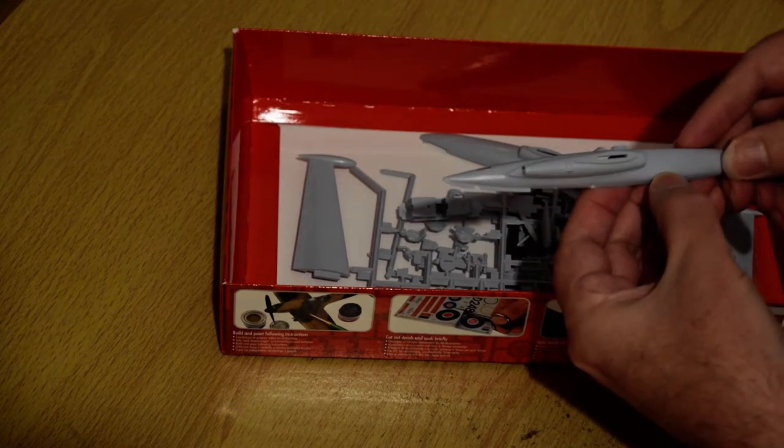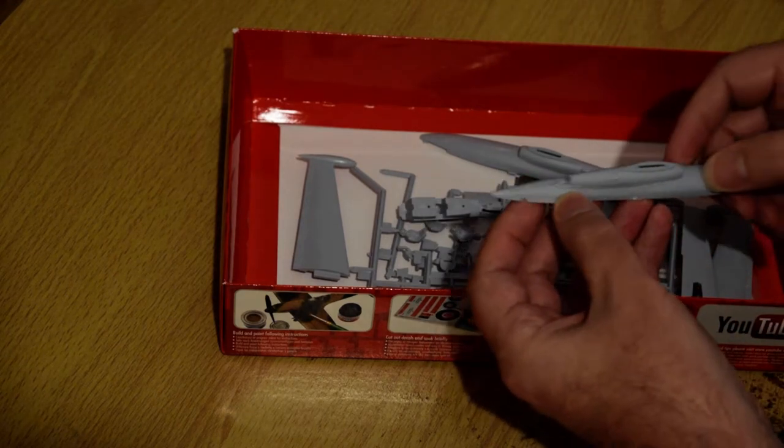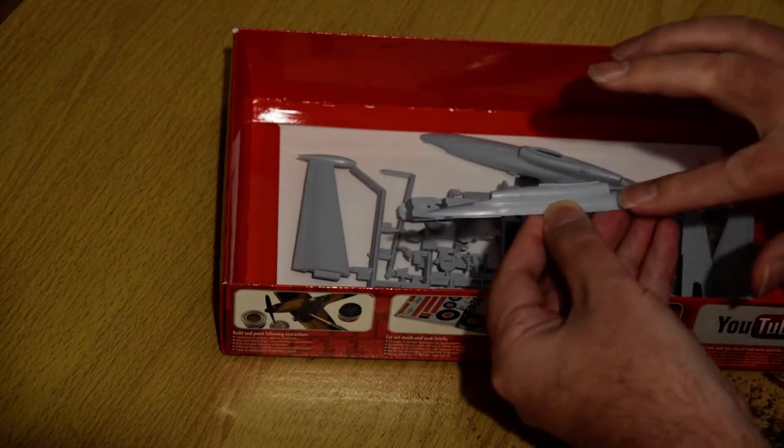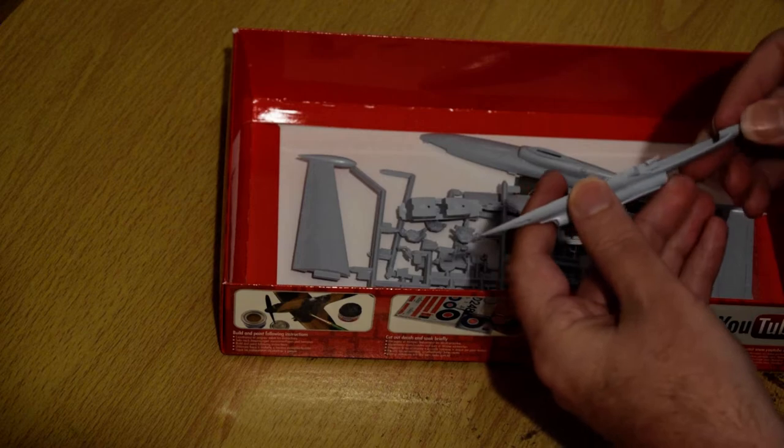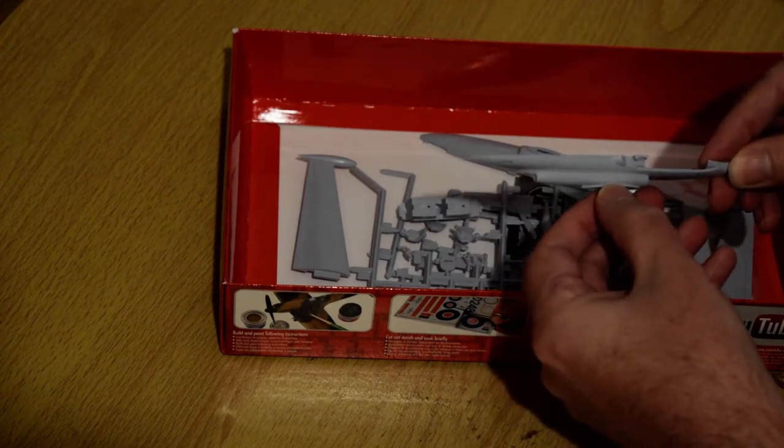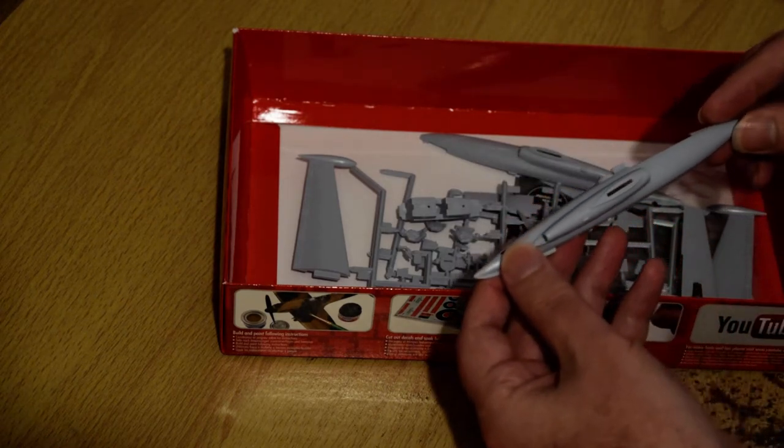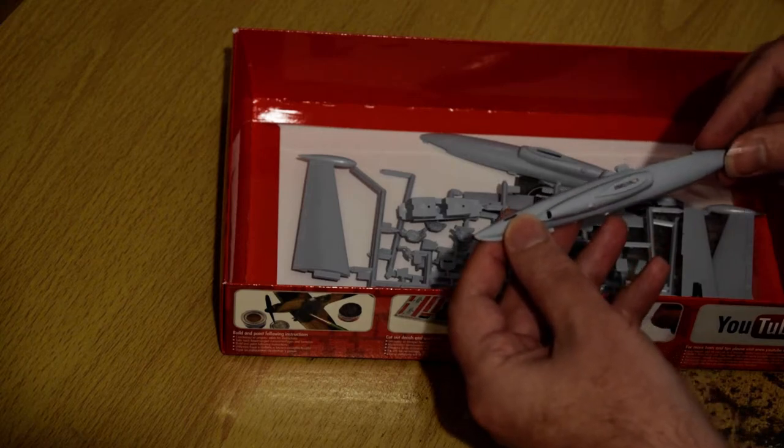They have some raised panel lines and the riveting you can feel with your fingers. It's quite large really, but that can be filed down if you need to, if you think that's appropriate, or leave it as it is, up to you.